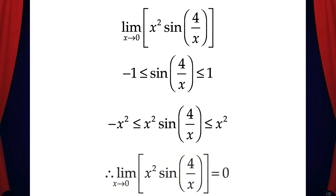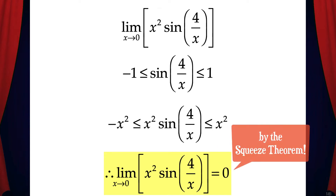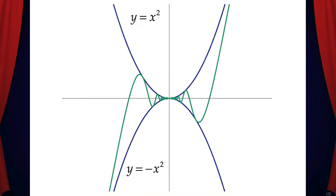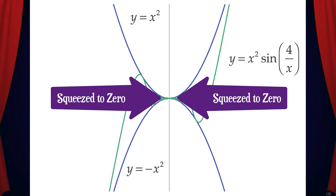Consequently, since x²·sin(4/x) is in between -x² and x², its limit as x approaches 0 also has to be 0 by the squeeze theorem. Let's take a look at this graphically. The two blue functions are x² and -x², and the green function is x²·sin(4/x). As you can see, the green function is always kept between the blue functions, and as x approaches 0, the green function is squeezed to 0 as well.